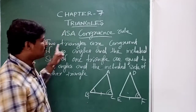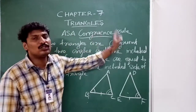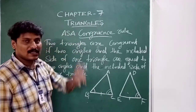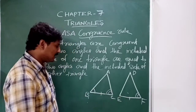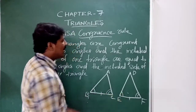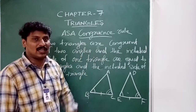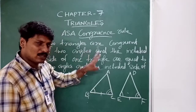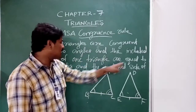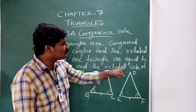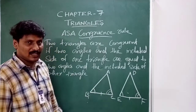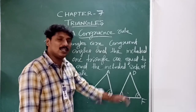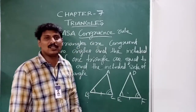Two triangles are congruent if 2 angles and the included side of one triangle are equal to 2 angles and the included side of the other triangle. As you can see, this is ASA congruency mode.